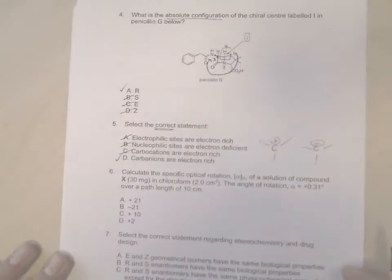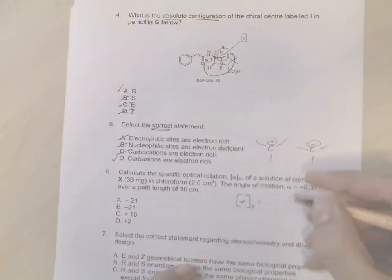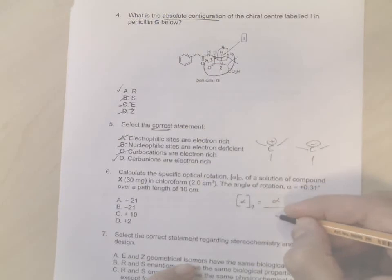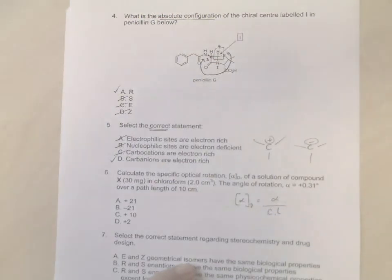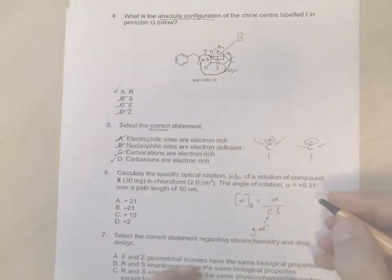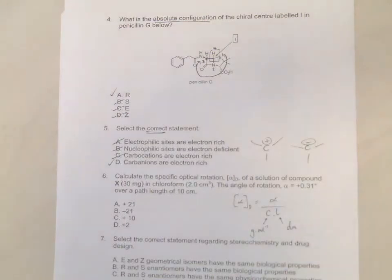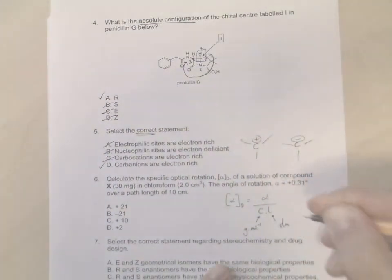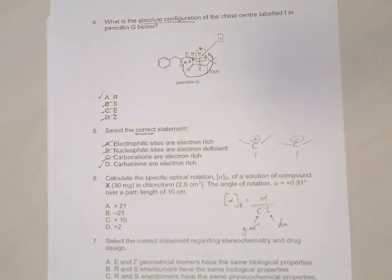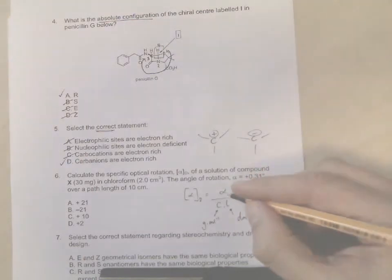Okay, so for this question you need to know the equation, so alpha d equals alpha divided by c times l. And units are very important. So remember the units for concentration are grams per mil, and length here is in decimeters.